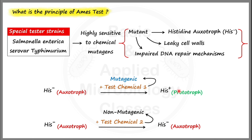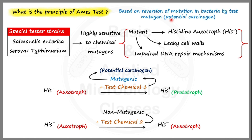Since test chemical 1 is mutagenic, there is also a good possibility that this mutagenic agent could be a potential carcinogen, because as per literature most carcinogenic agents also show mutagenic properties. So the Ames test works on the principle of reversion of mutation in bacteria by a test mutagen or potential carcinogen.